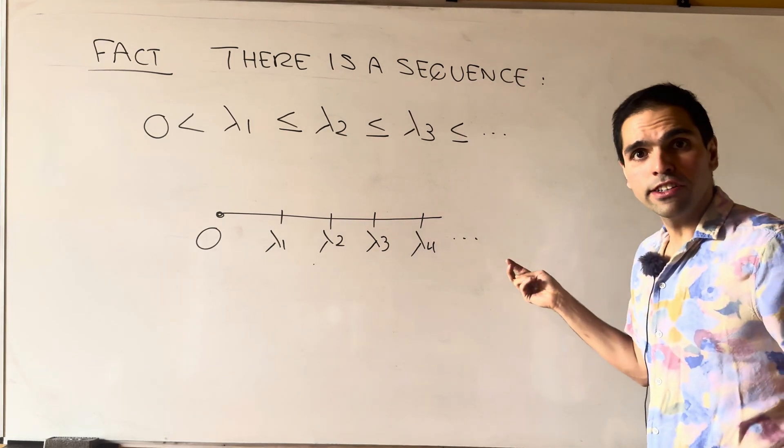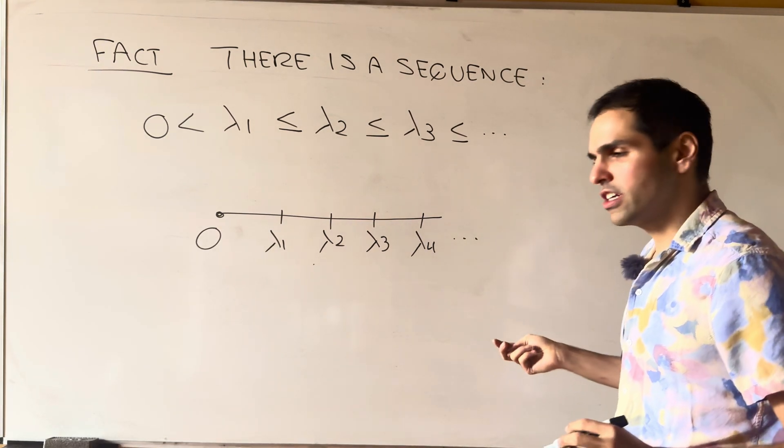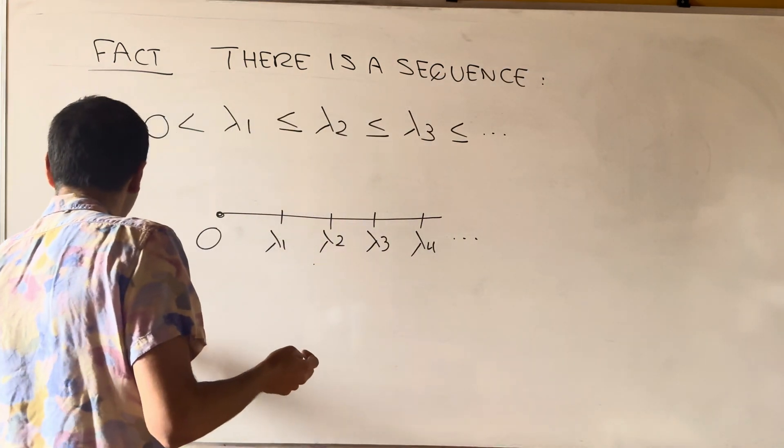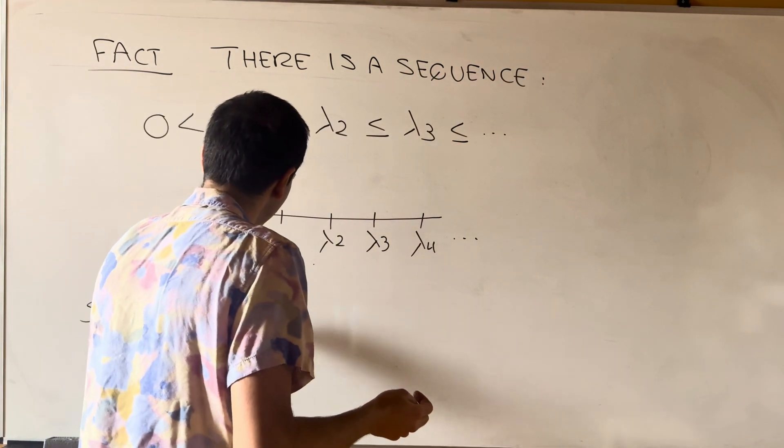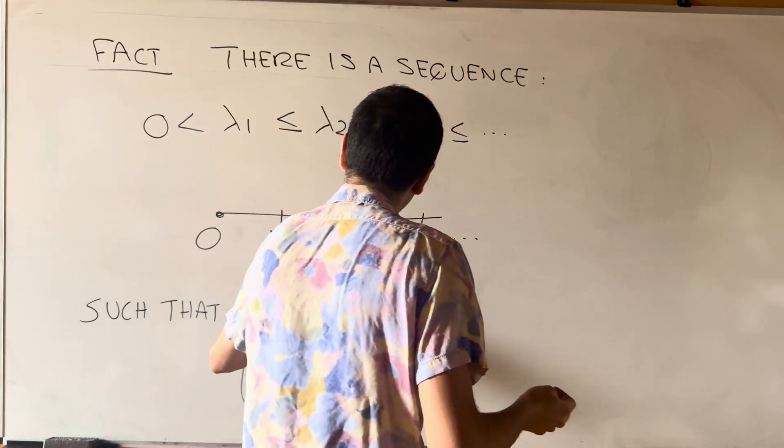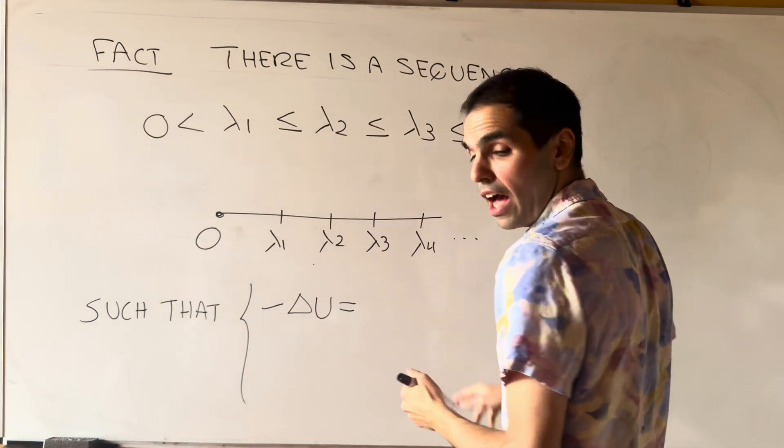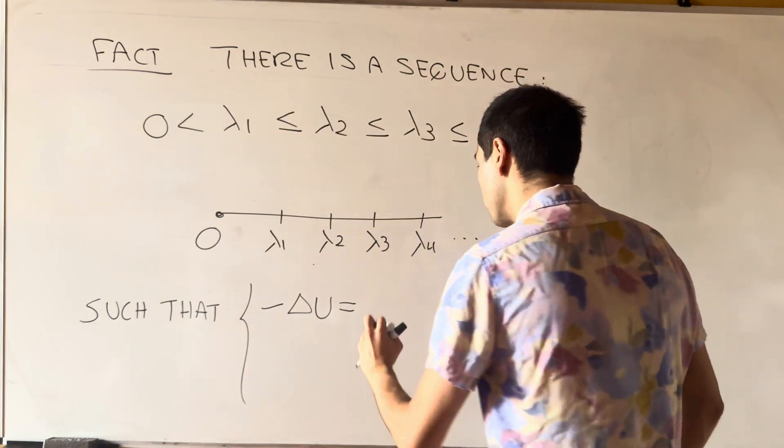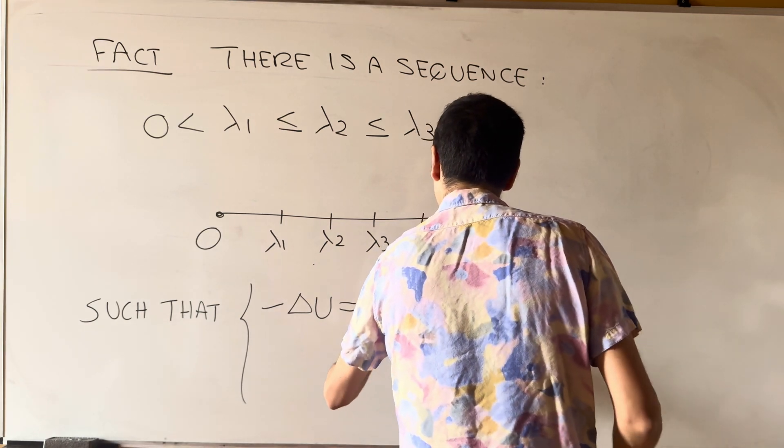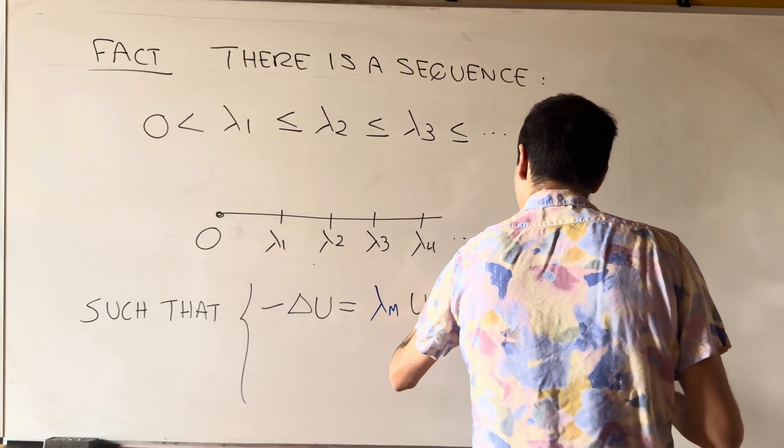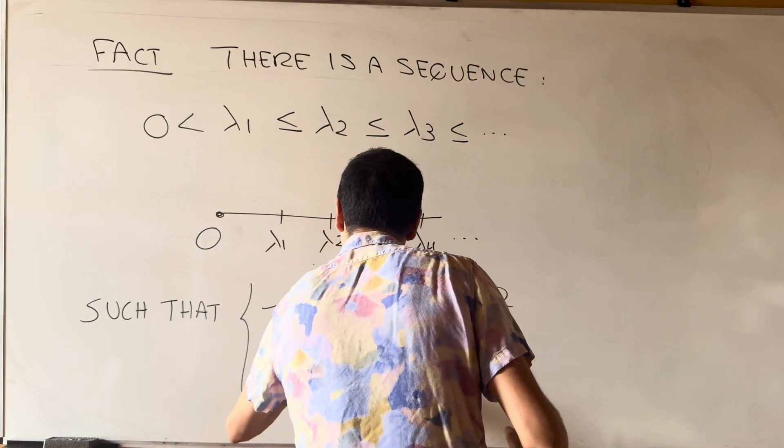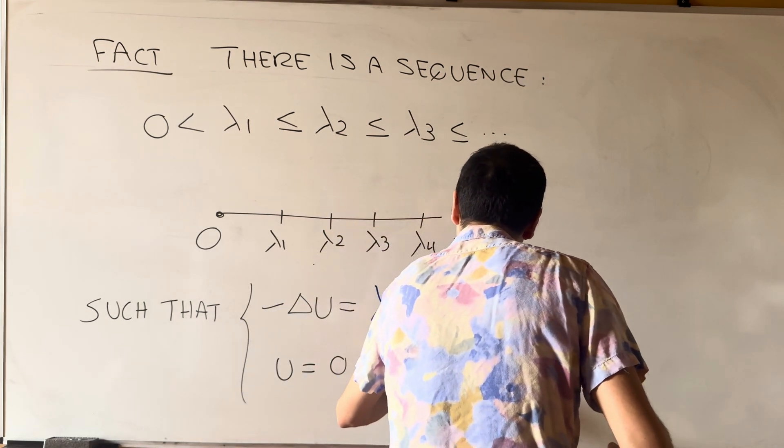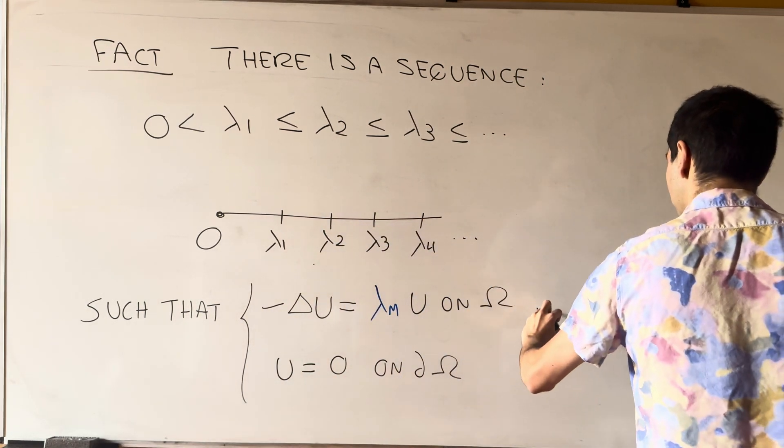Such that the previous problem has a non-zero solution. If you take minus Laplace of u equals either one of those eigenvalues. So lambda and u on the region and u equals zero on the boundary has a non-zero solution.